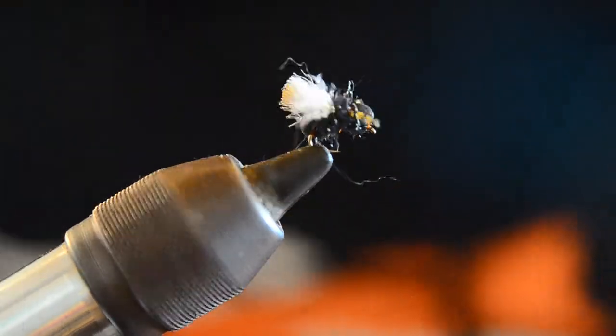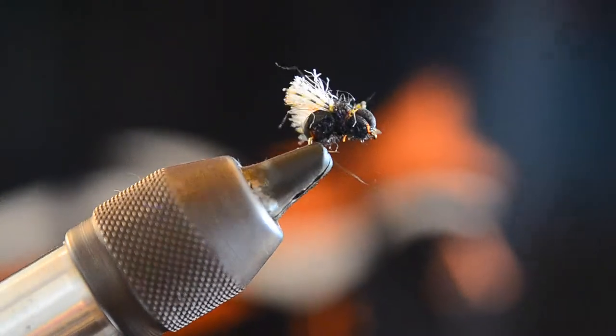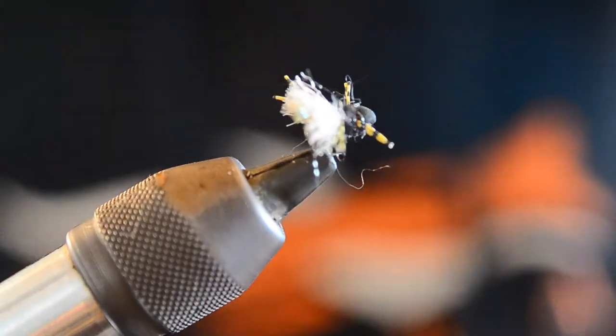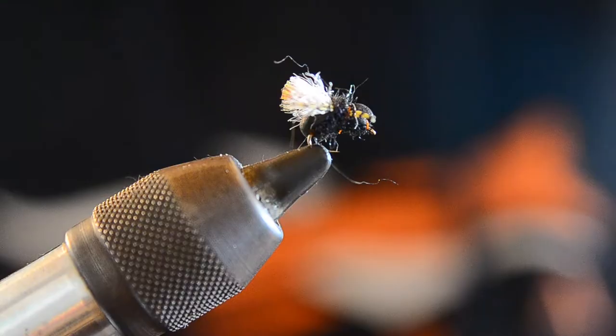And we have a nice little foam floating ant or flying ant. Floats very well, very easy to see. You can kind of trim some of this stuff up if you want. There you go, black foam flying ant. Great little pattern here in the summer in the west. Thanks for watching.